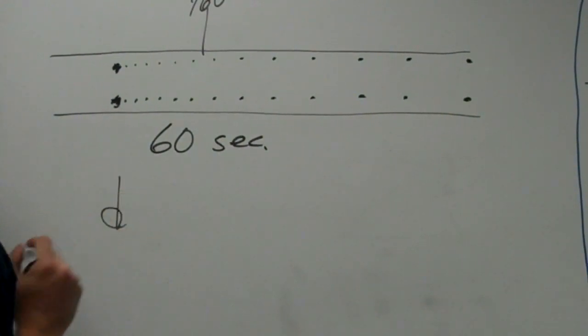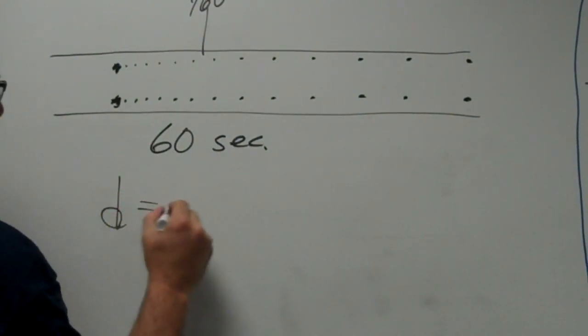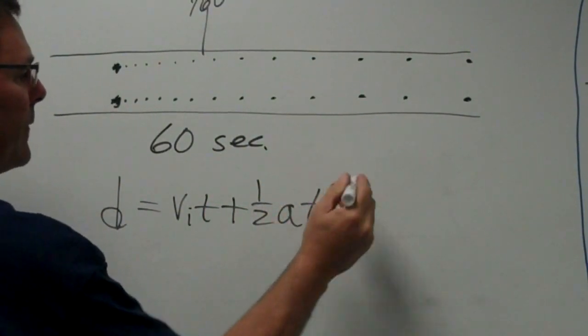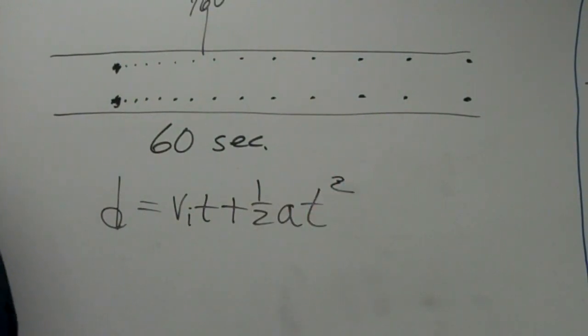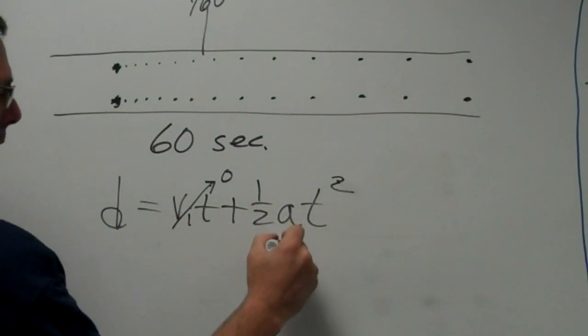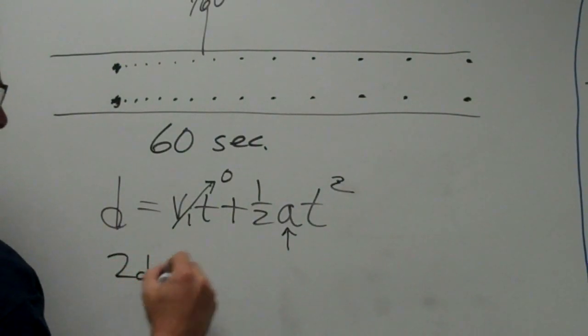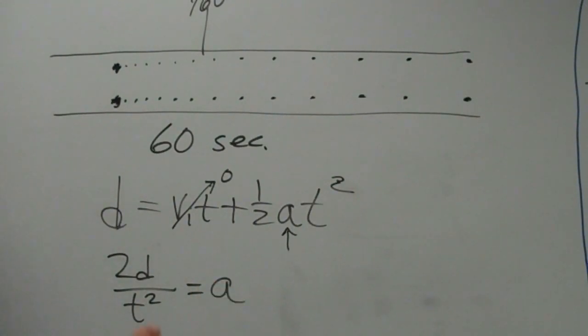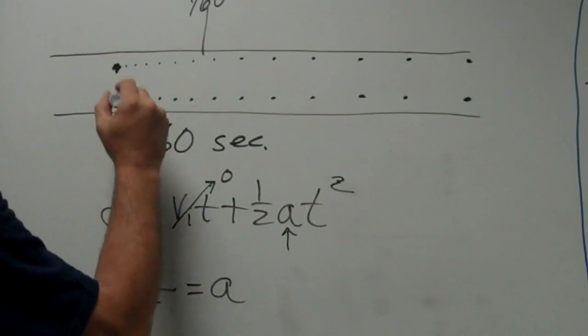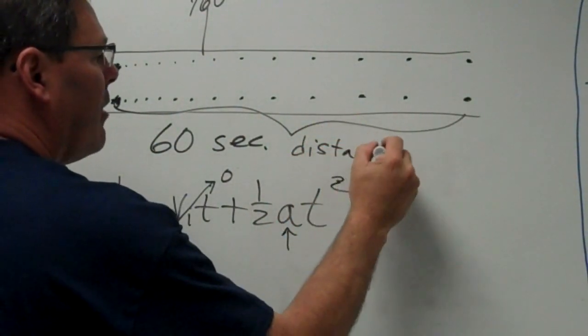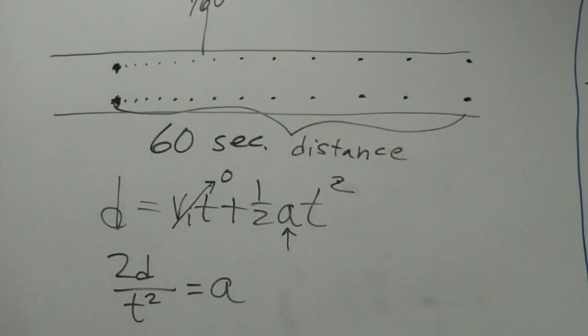We know our equation for displacement with constant acceleration is the initial velocity times time plus 1/2 at squared. If it starts from rest, this term goes to zero. The initial velocity is zero. And I solve this equation for a. So I cross multiply the two, divide by the time squared. That equals my acceleration. So this distance will be the distance the cart has rolled and the amount of time it takes to do that.